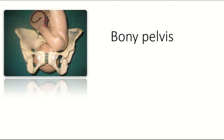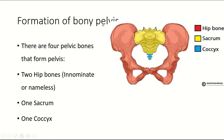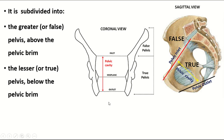Welcome to Easy Human Anatomy channel. In this video I discuss bony pelvis with test questions. The bony pelvis is formed by four bones: two hip bones, one sacrum, and one coccyx. The function of the pelvis is to connect the spine to the lower limb. It is an important part of the skeletal system which bears and transmits weight from the trunk to the legs, bears weight during sitting, helps in walking and running, protects pelvic organs, and in females is specially set up for childbearing.